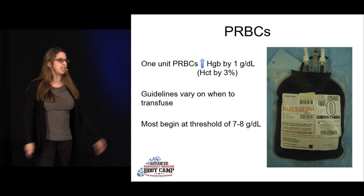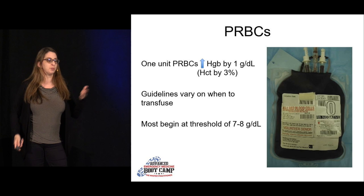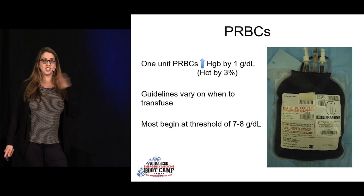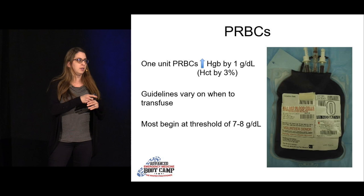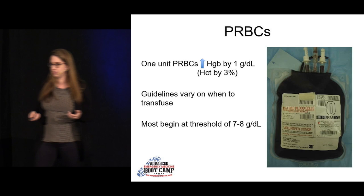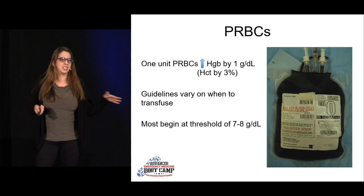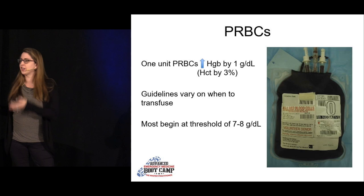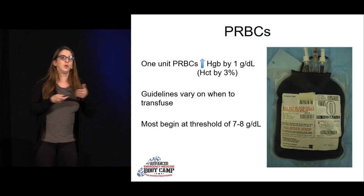Indications for PRBC transfusion include active bleeding and symptomatic anemia. Importantly, the measured hemoglobin, hematocrit, and vital signs will lag behind the actual clinical picture — so you can't wait for the H&H to find its balance. If the patient is bleeding out, give blood. Our typical transfusion threshold is around 7, but for cardiac patients we may go a little higher at 8.